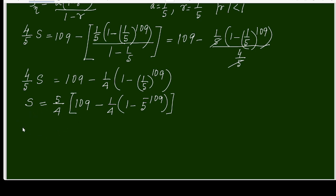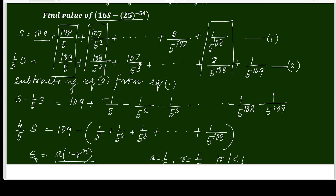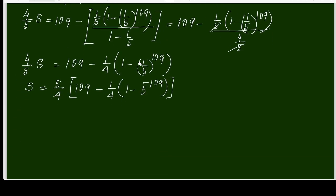It is asked about 16 times S. Let me check once: 16 times S minus 25 power negative 54. So what will be 16 times S? 16 times S equals: this 4 will be cancelled. So it will be 5 by 4 into 16 times 109 minus 1 by 4 times (1 minus 5 to the power negative 109).